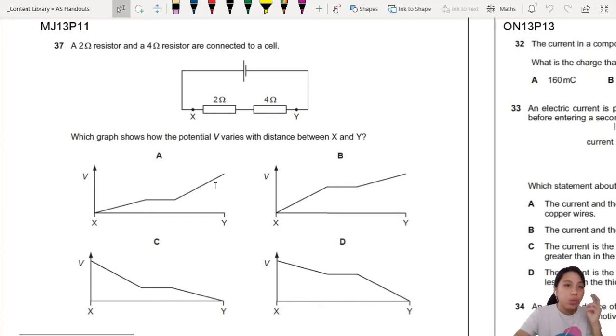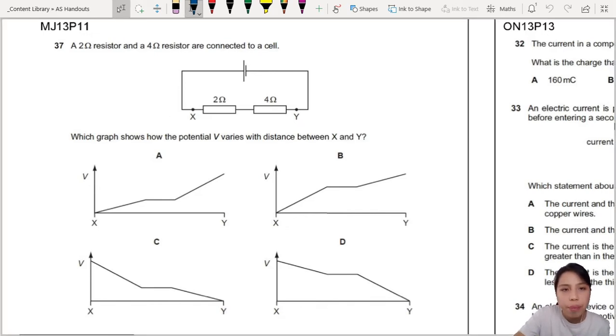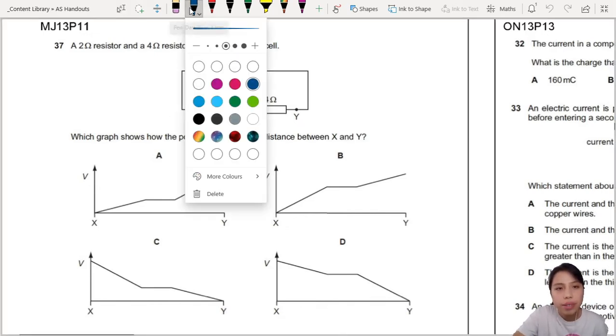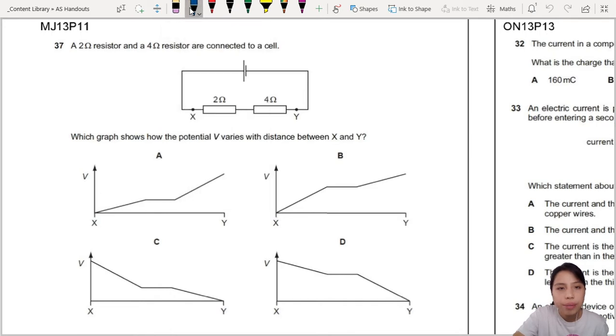So here we have a basic circuit, two resistors. There's a few ways to draw resistors, by the way. You can do a squiggly line or a box like that. Anyway, we have two resistors connected to a cell, 2 ohm, 4 ohm. Good to know.